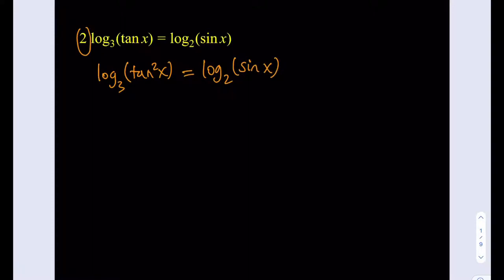And the second step, since the bases are different, I can't really solve this directly. So what I'm going to do is use substitution. Let's set it equal to t. From here, I'm going to be getting two things. First, tangent squared x equals 3 to the power t, and sin x equals 2 to the power t.